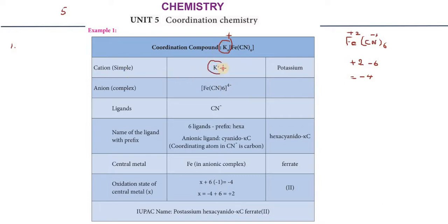This is the symbol, this is the ligand, and this is the anion complex. If you have a metal atom, this is the anion complex. First, identify cation and anion. First name the cation and then the anion.